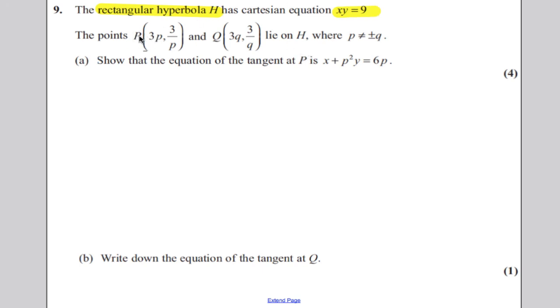We are given points on the line, p is (3p, 3/p), they're the parametric form, and q is (3q, 3/q). So they're the exact same, but we're told p is not equal to positive or negative q.